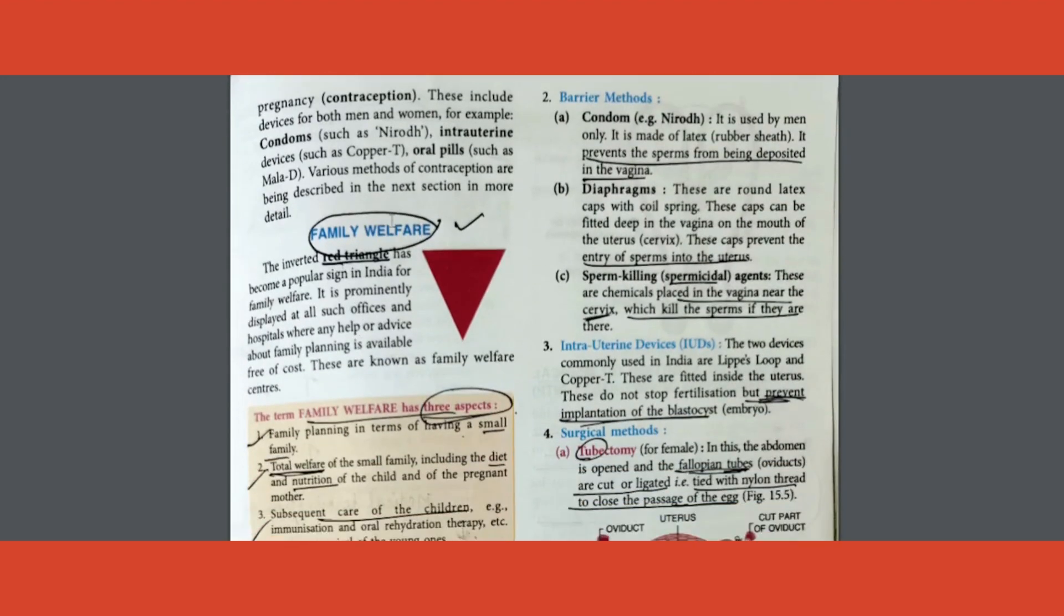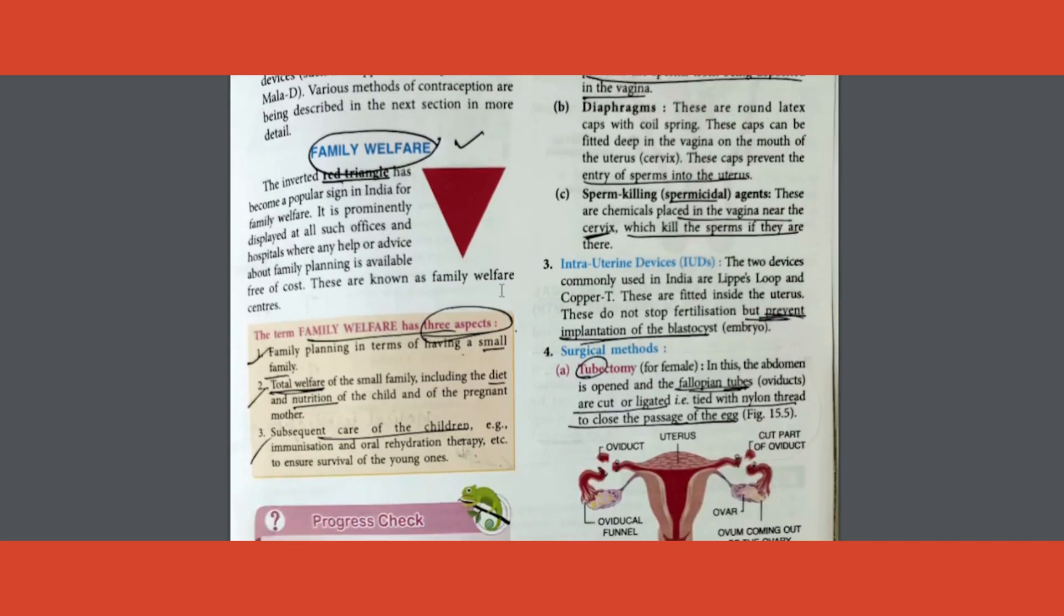Next comes, the red inverted triangle stands for one mark question. The red inverted triangle stands for family welfare. Three aspects are there under family welfare. These three, learn them up. Read once, it should be sufficient. What are the aspects? First and foremost, to get small family, welfare of the family, care for the children. Mark them, enough.